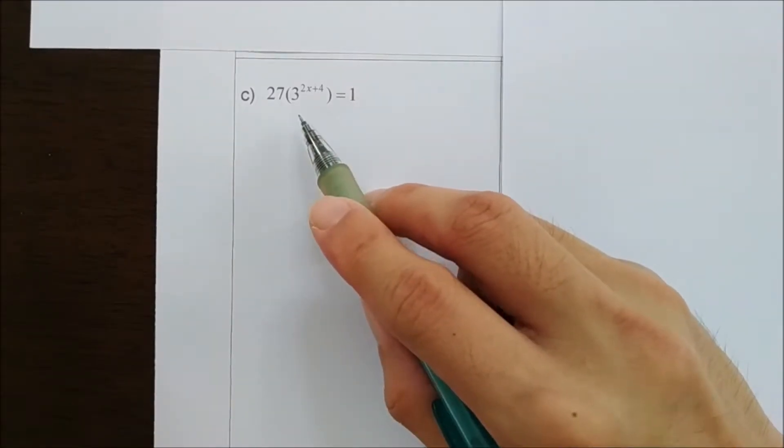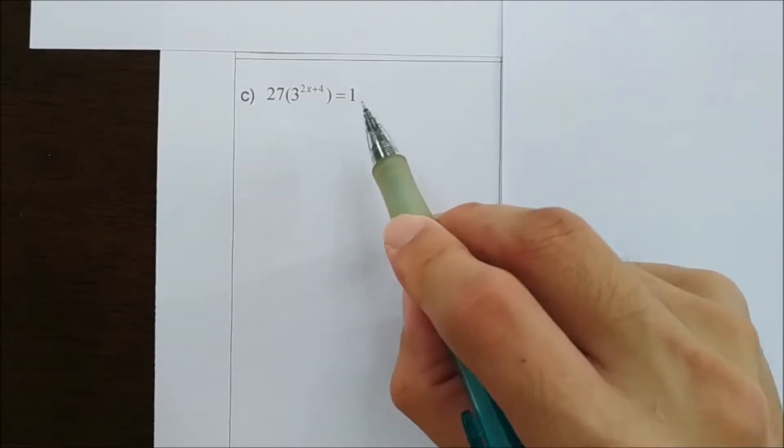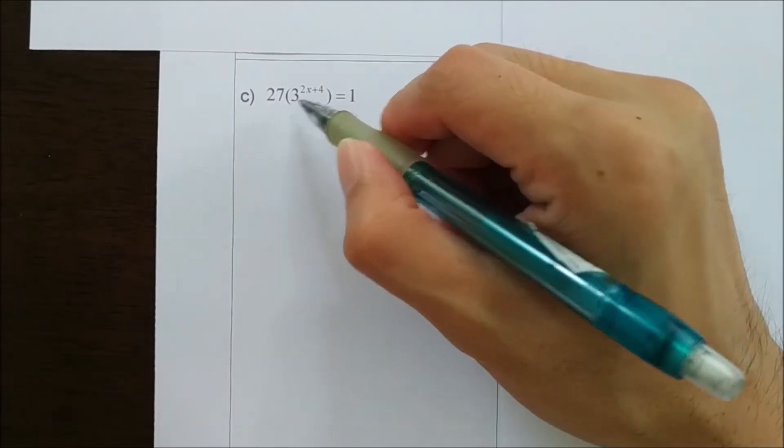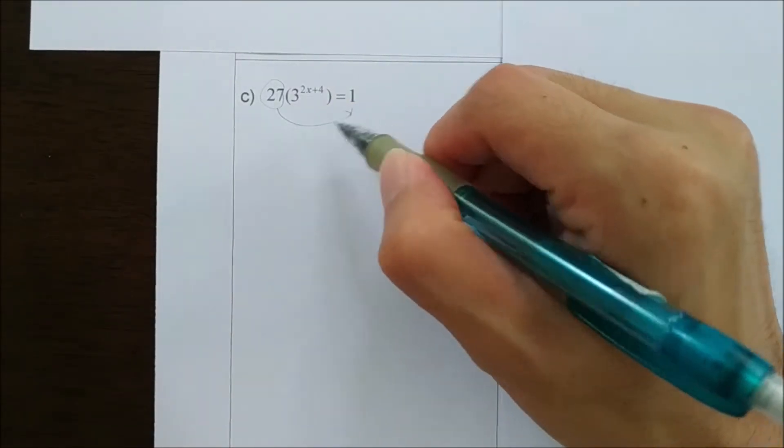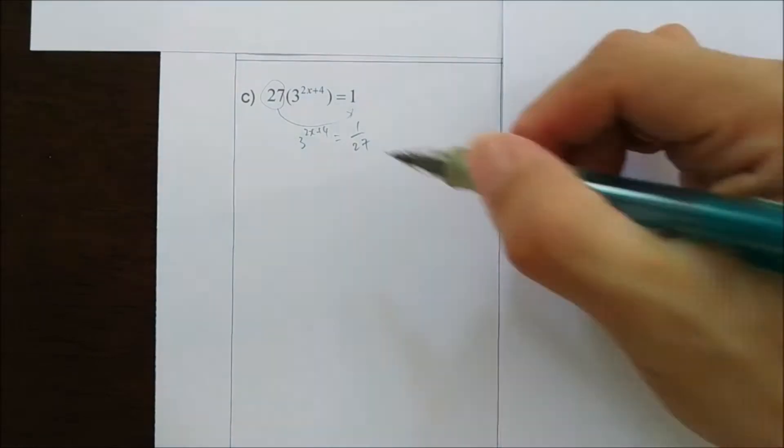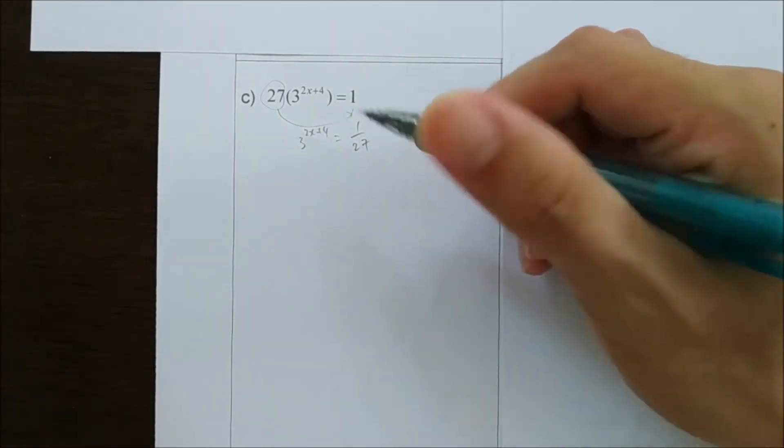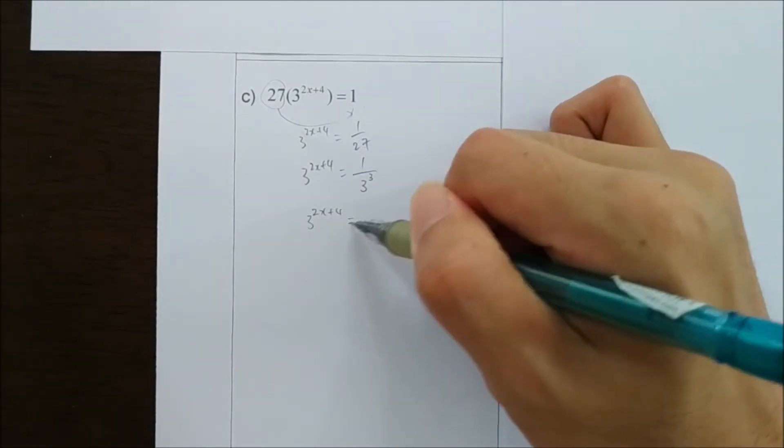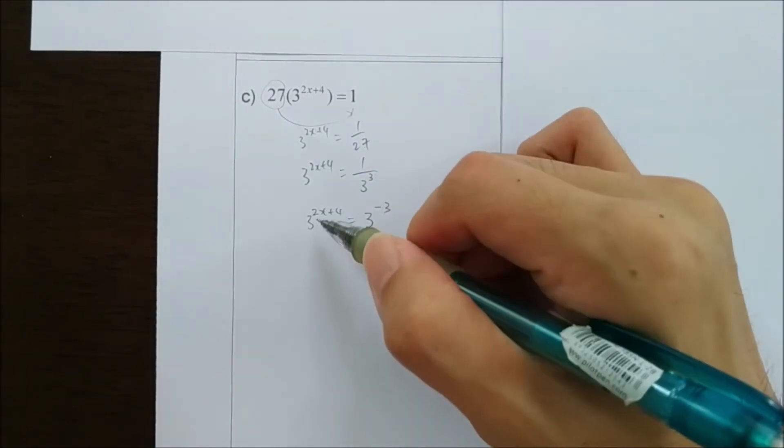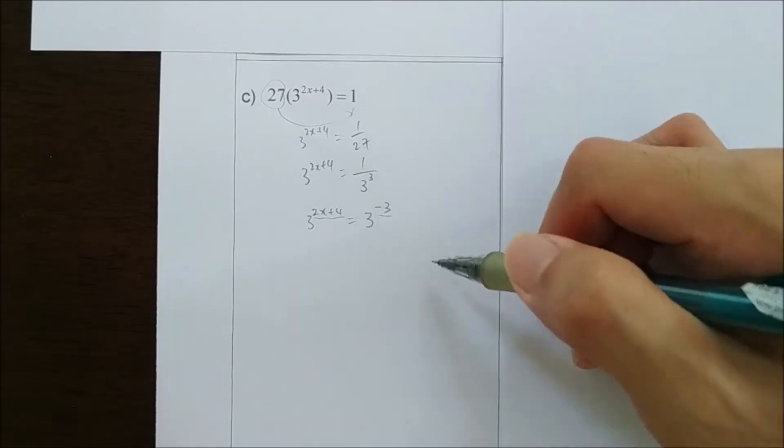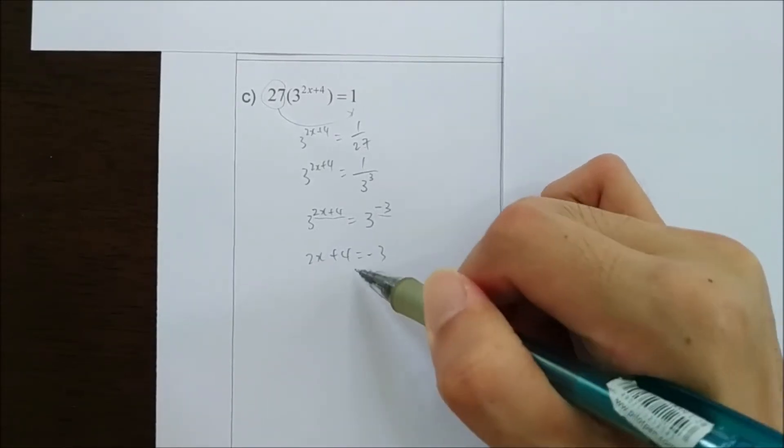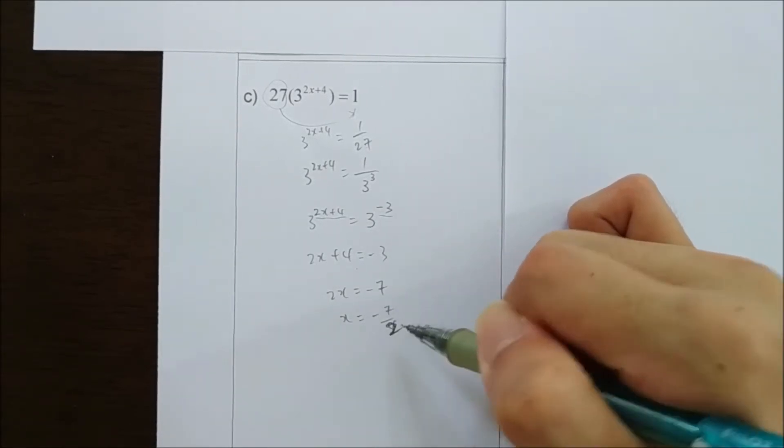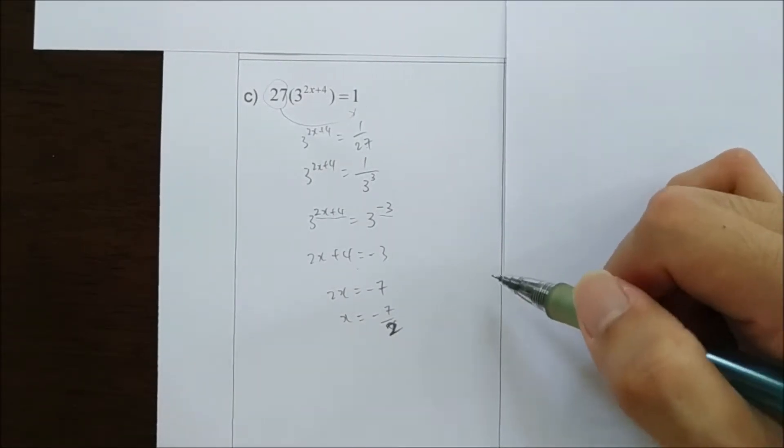Now, for this question, we don't have to factorize it. We only have to move all the numbers to the left-hand side. First, we move 27 here, you get 3 to the power of 2x plus 4 equals 3 to the power of negative 3. Hence, by comparison, 2x plus 4 equals negative 3, and then x equals negative 7 over 2.